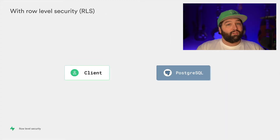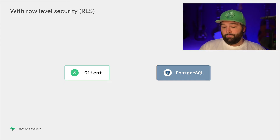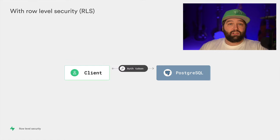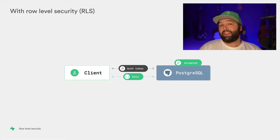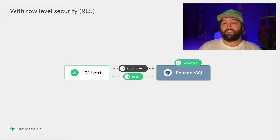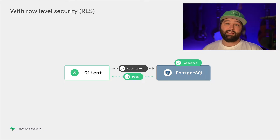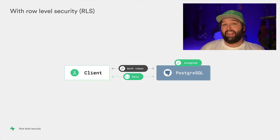In the row-level security architecture, the client can talk directly to the database, so there's no actual need to have that API in the middle. The client just sends across their authorization token or says who they are to the database, and then the database decides, based on those row-level policies, whether the user should have access. Not only can this make your queries more efficient because you don't need that extra hop through the API, but you also protect yourself from writing bad logic in the API that potentially exposes data. By writing the access rules in the database itself, it makes it very hard to accidentally leak out that data.